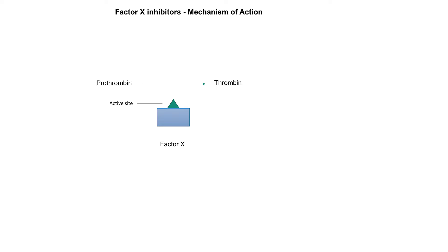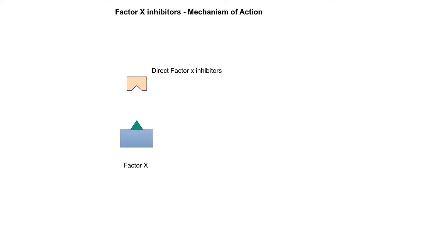Factor 10 has an active site, and this active site converts prothrombin to thrombin. If we have a drug that can bind to and block this active site of factor 10, then factor 10 will not be able to convert prothrombin to thrombin, and this will contribute to the anticoagulant effects of that drug.